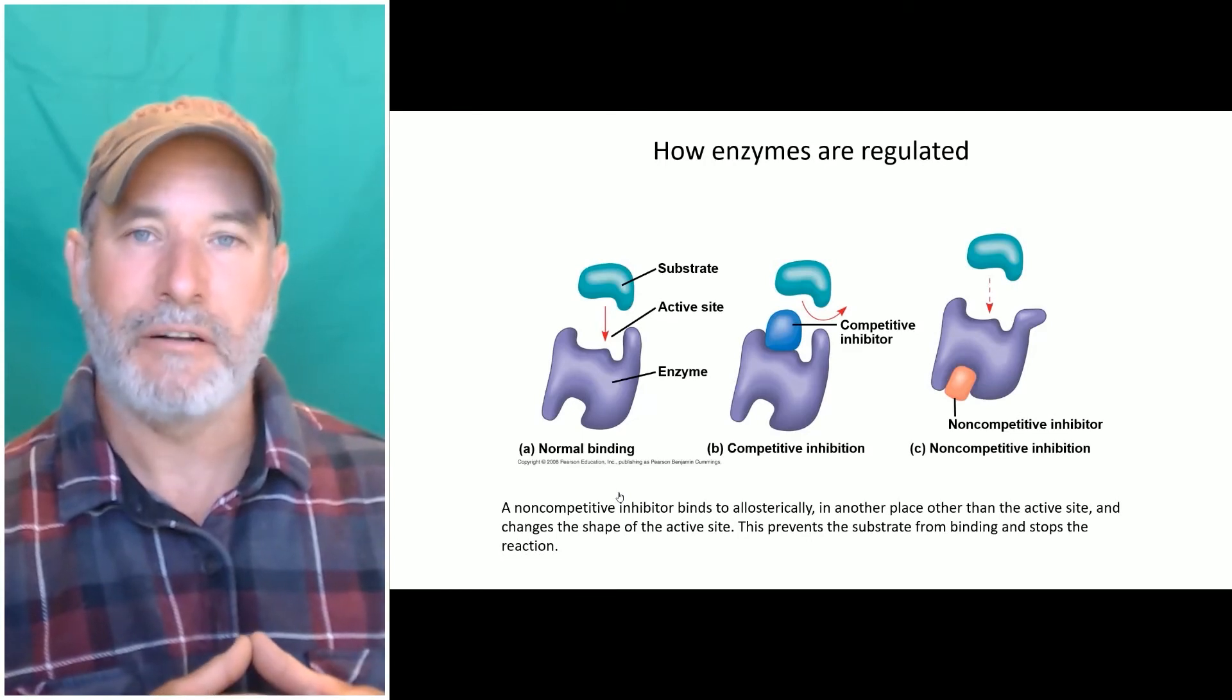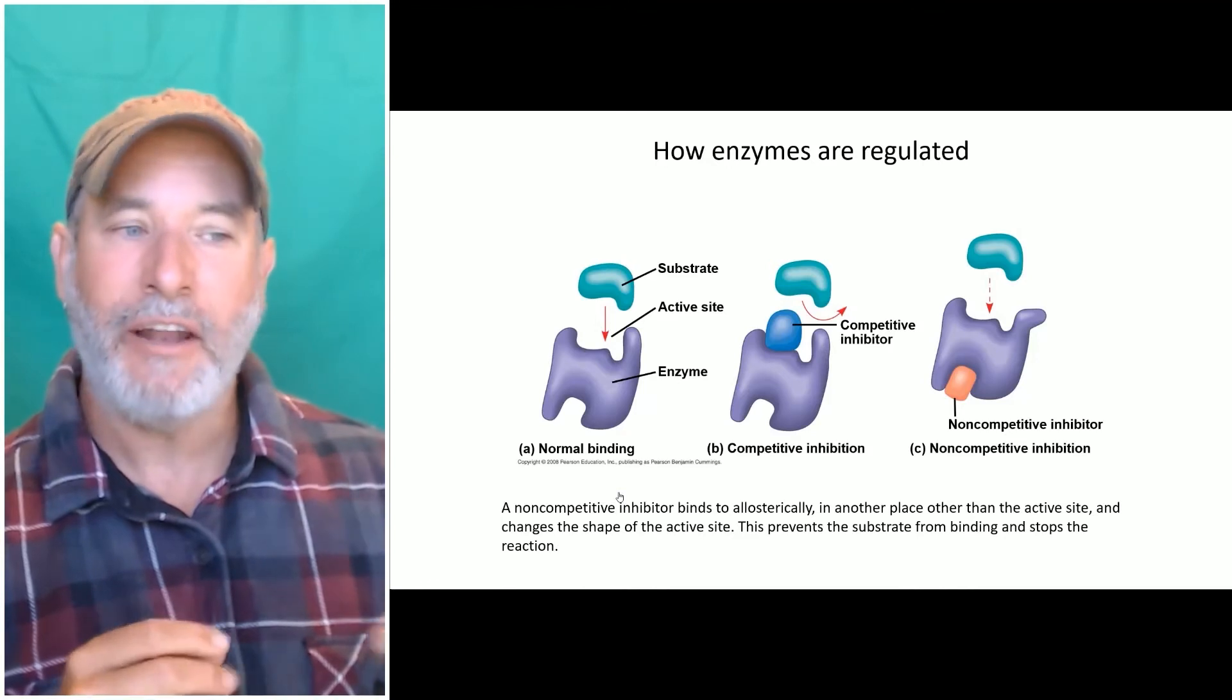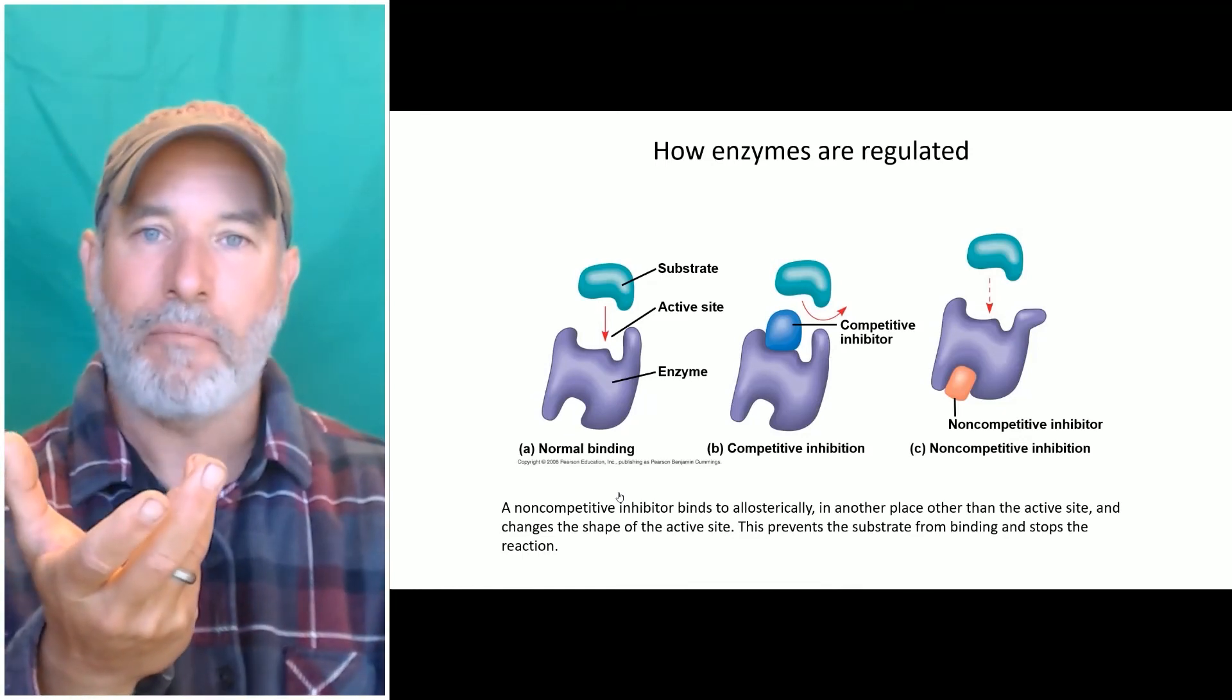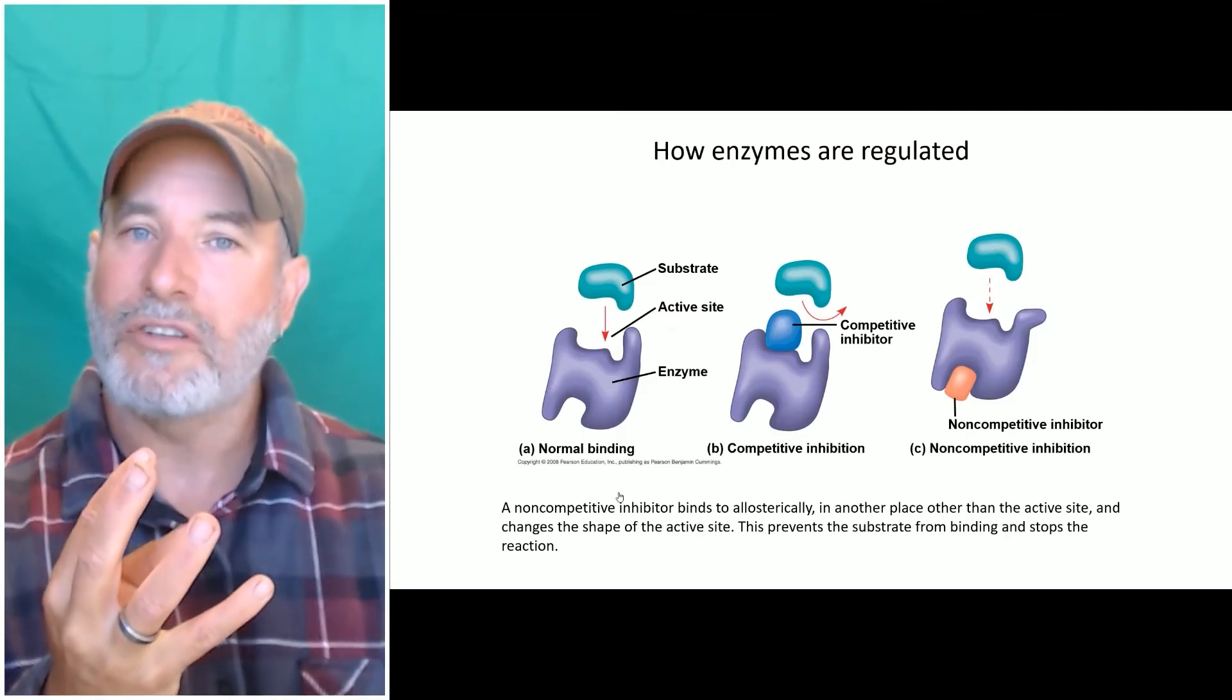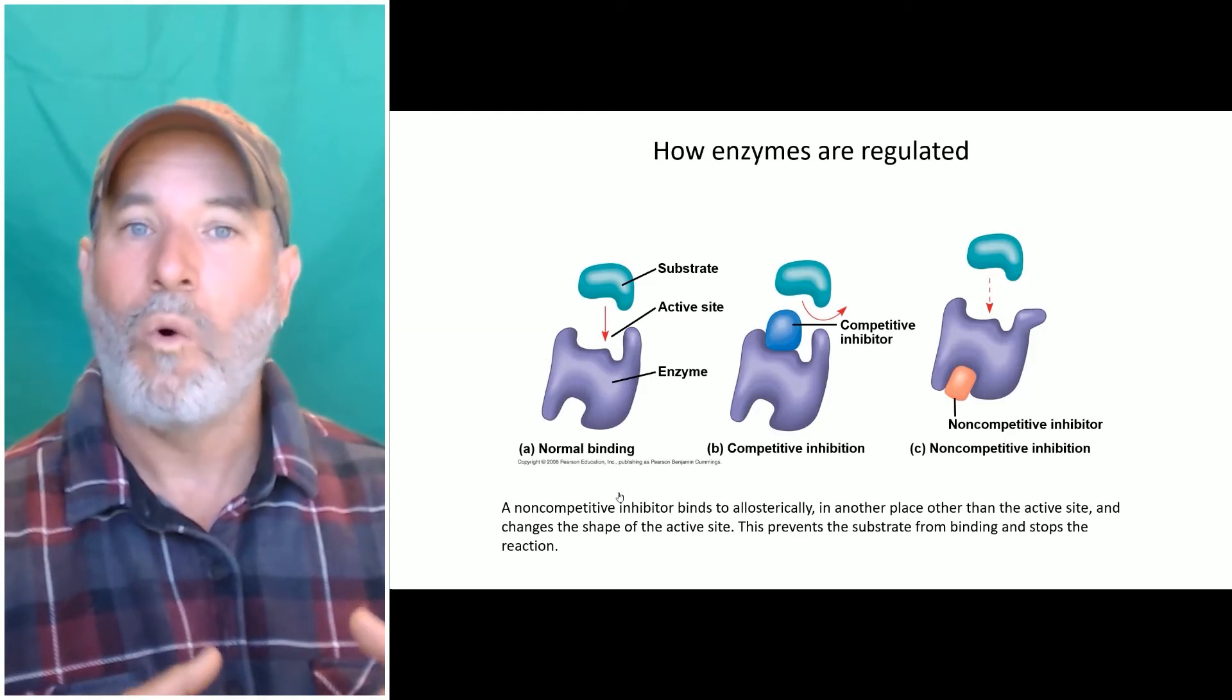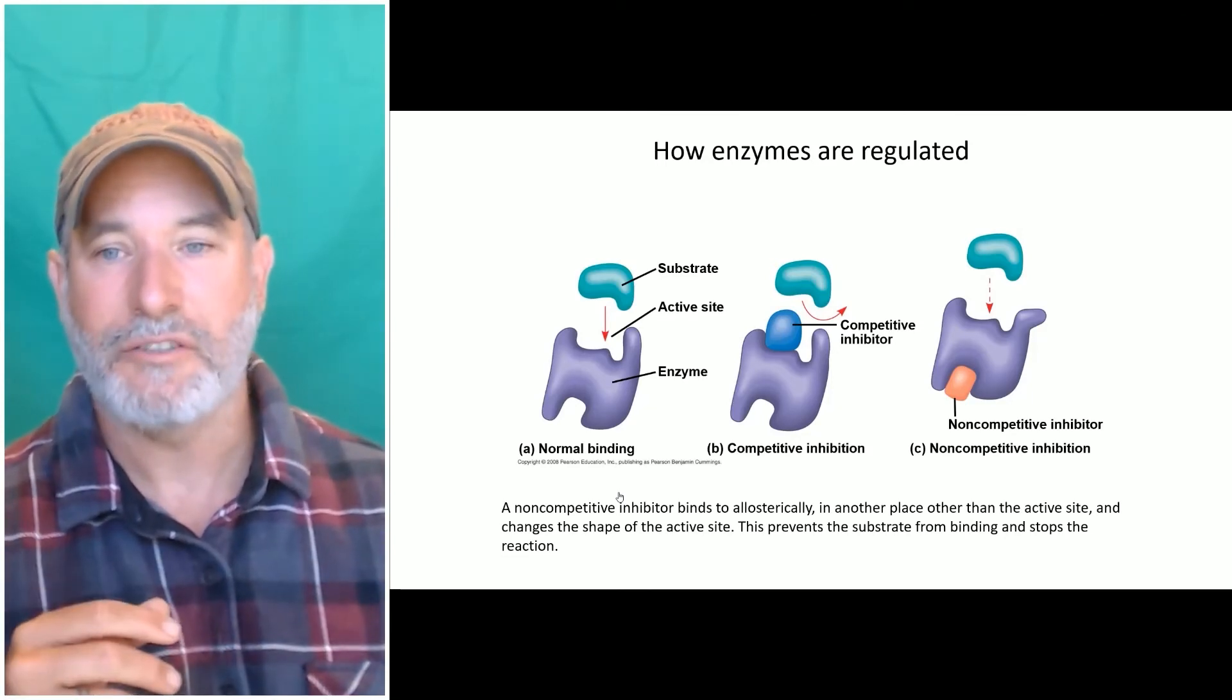The other one is non-competitive inhibition - this is also allosteric inhibition as well. Allo just means away from, and steric has to do with shape. A non-competitive inhibitor - you've got your enzyme, you've got the active site where the reactants are going to bind. If I come at another place in the enzyme that's not the active site and bind to it and cause the active site to change where your substrates can't bind to it, then you've turned off that enzyme, at least temporarily, because your non-competitive inhibitor, once again, might be the product of a metabolic pathway. As you use up your product, they come off the enzymes, the enzymes once again begin to work as well.